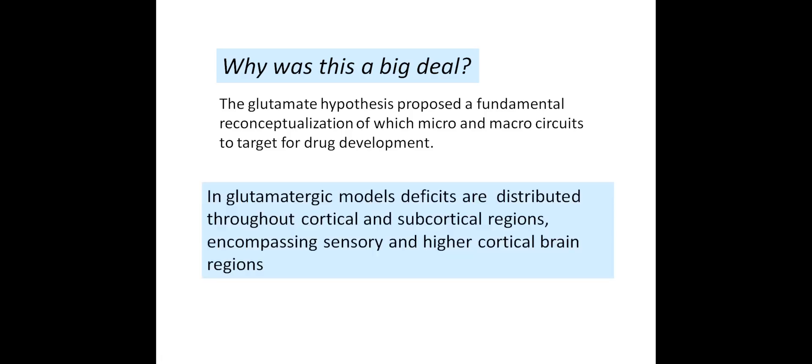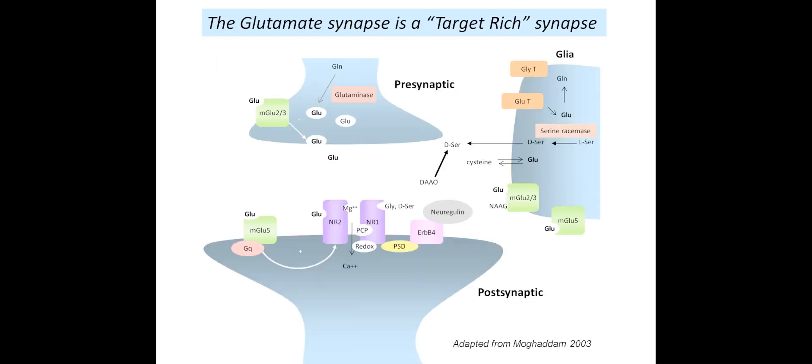Glutamate hypothesis of schizophrenia was really simple when it started. It essentially just stated that glutamate neurotransmission is hypofunctional, and then it kind of graduated to NMDA receptor being hypofunctional. The primary evidence for it has been and remains that the NMDA receptor antagonists are psychotomimetic. This was a big deal in the beginning for many of us because it really provided a fundamental shifting in our thinking of which micro and macro circuits are involved in the pathophysiology of schizophrenia.